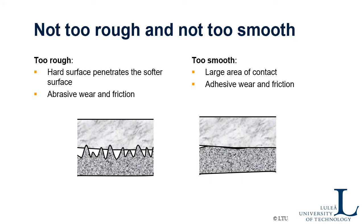The answer is: it shouldn't be too rough and shouldn't be too smooth. It's always something in between that is best. If you make a surface too rough — and also make one surface rough and hard — you will penetrate into the other, softer surface and create plastic deformations, which are permanent and damage the surface. The asperities also stop the other surface from moving, causing a lot of friction. We call that abrasive friction, and the damage is called abrasive wear.